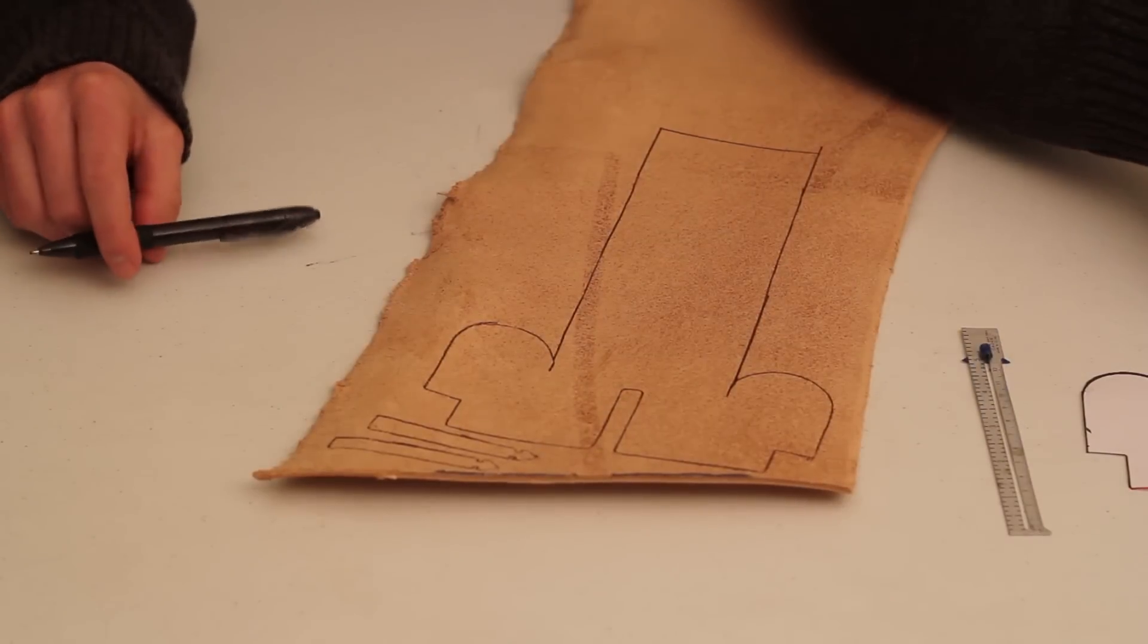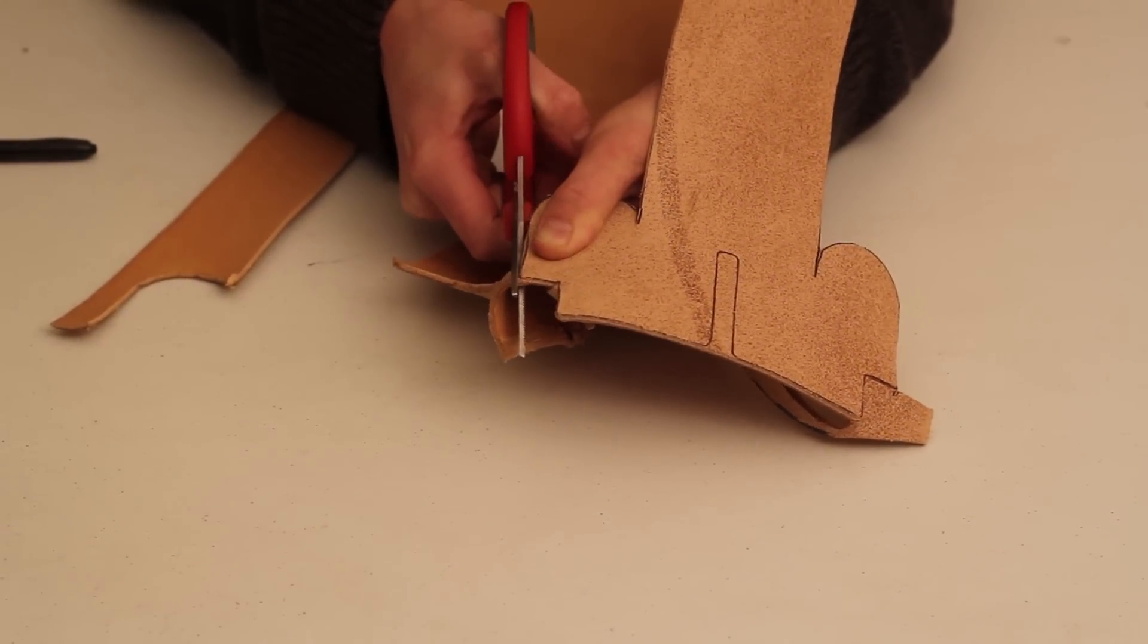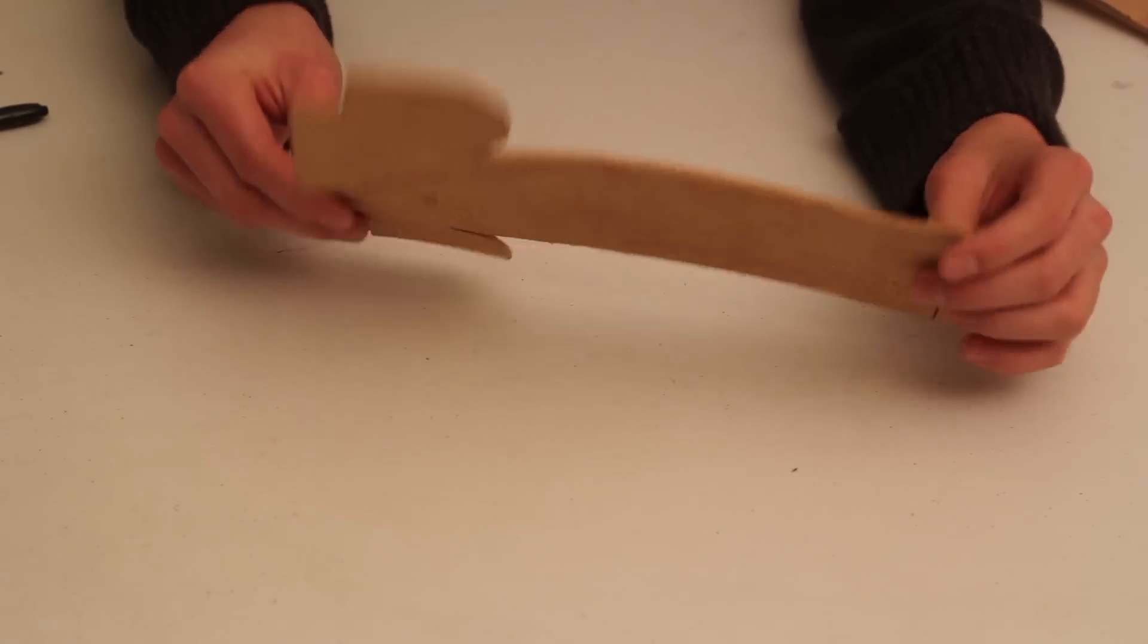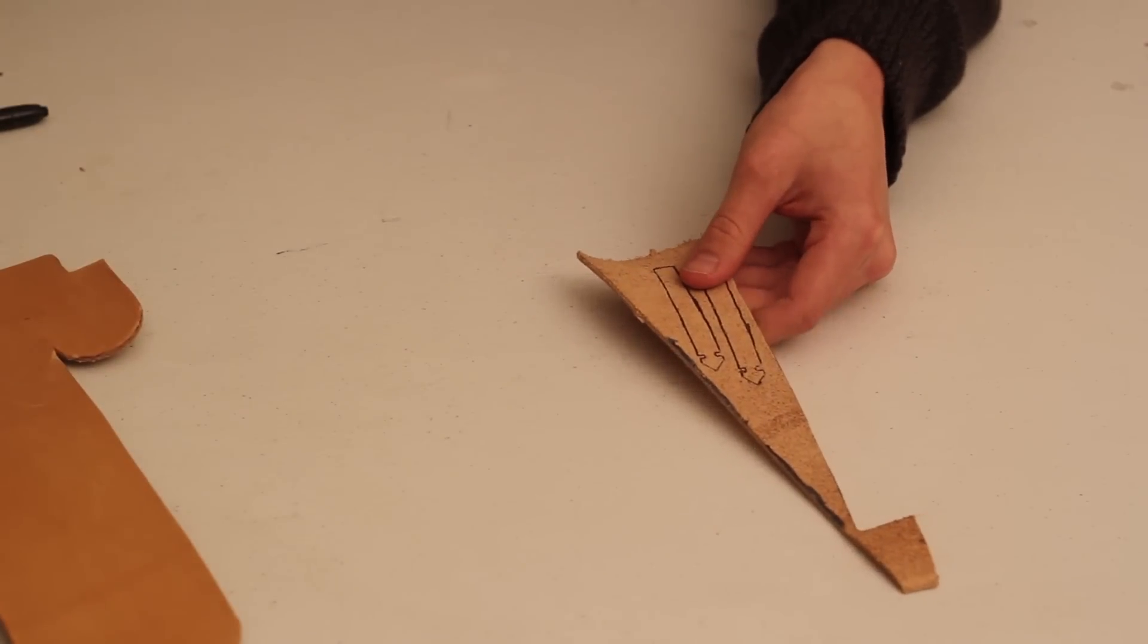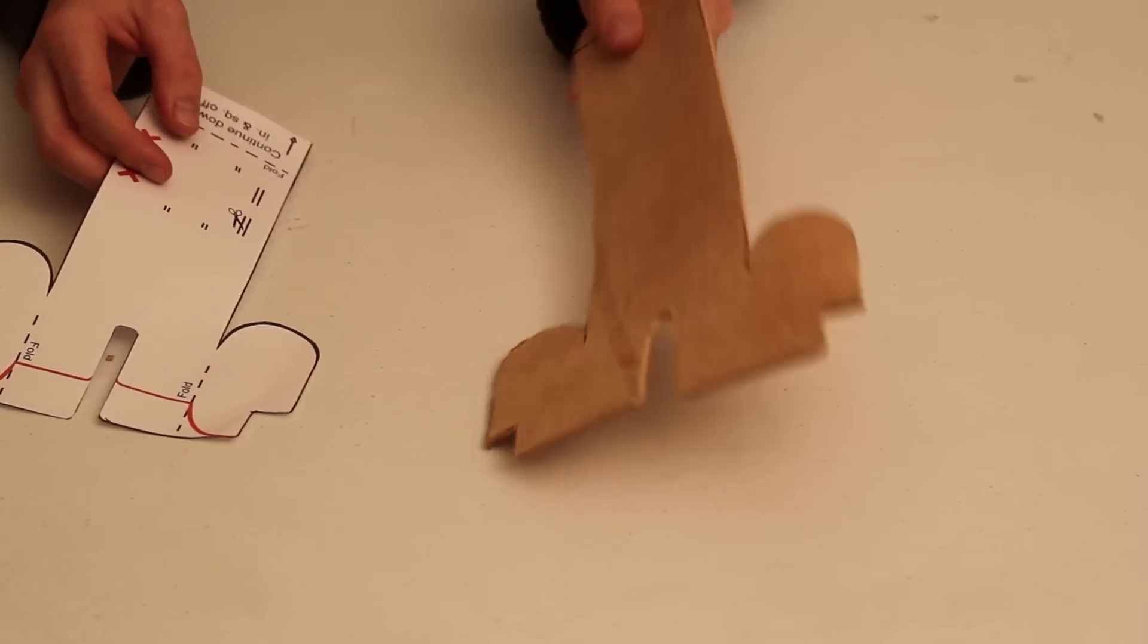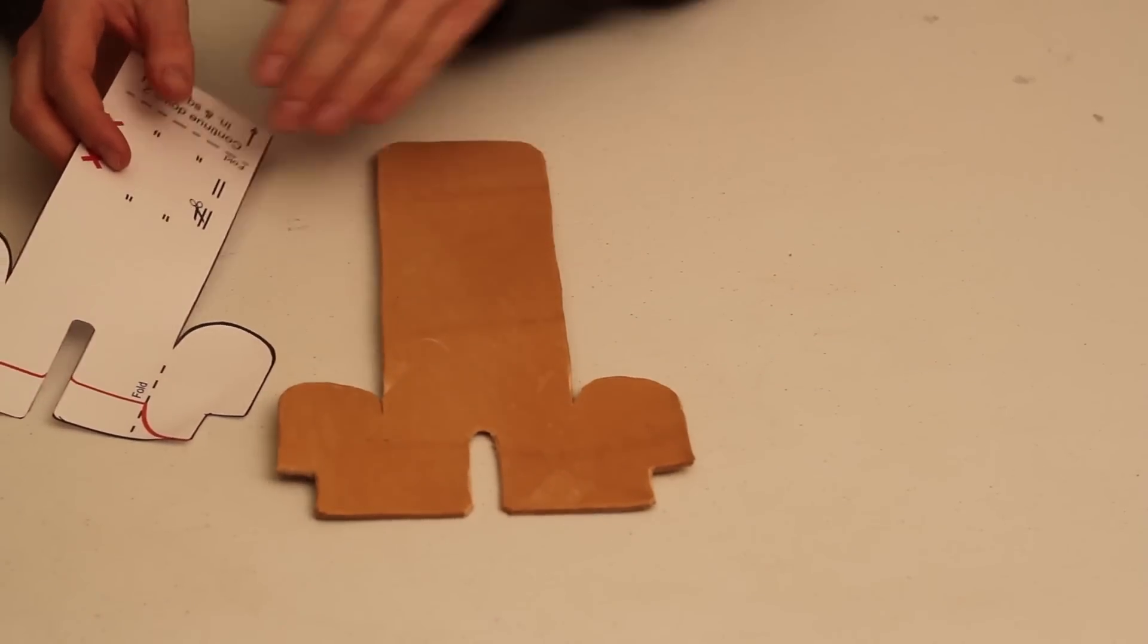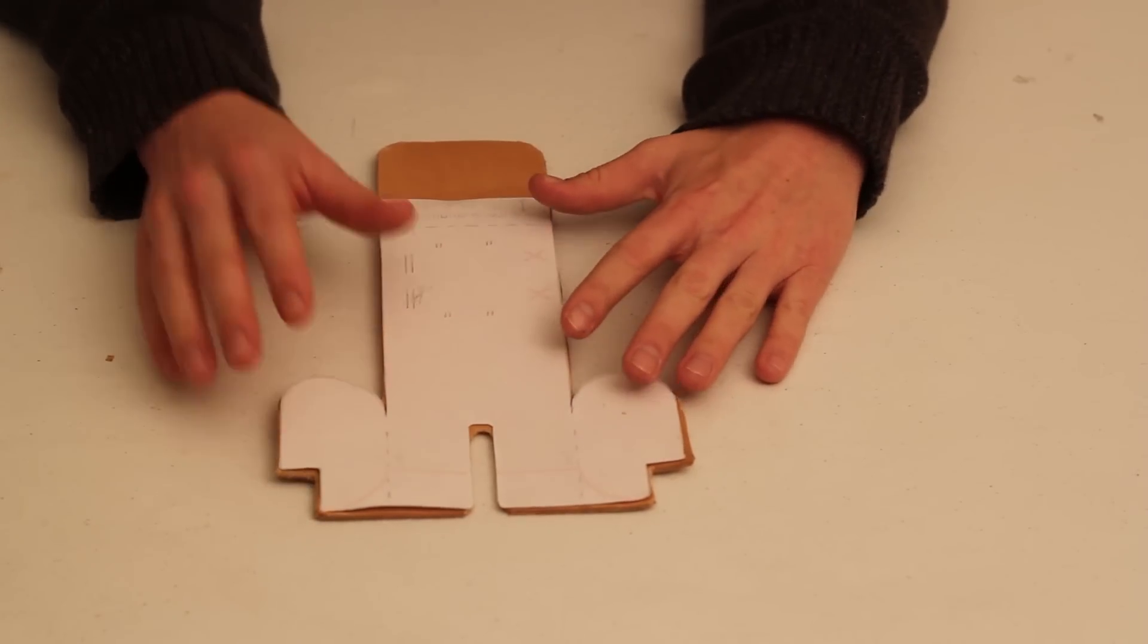The next thing we'll do is cut this pattern out. At this point, it should look like that. Next, we'll cut out our straps. So now, because you traced your pattern on the backside of the leather, you're going to flip your pattern over so it's like this on the front side of the leather.